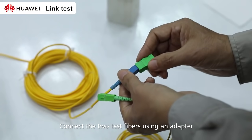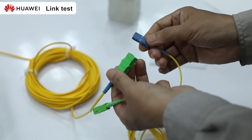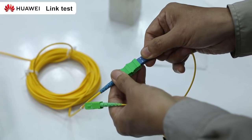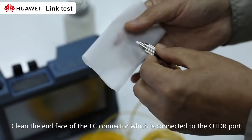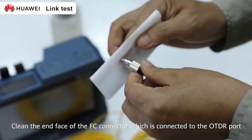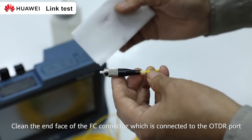Connect the two test fibers using an adapter. Clean the end of the FC connector which is connected to the OTDR port.